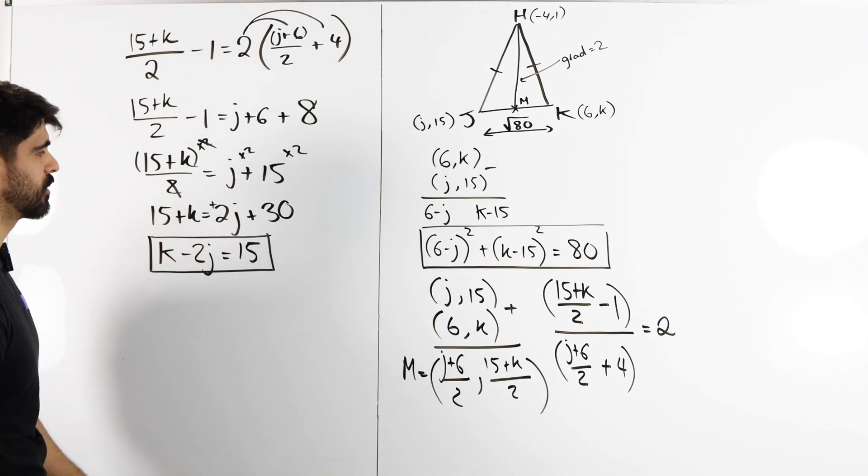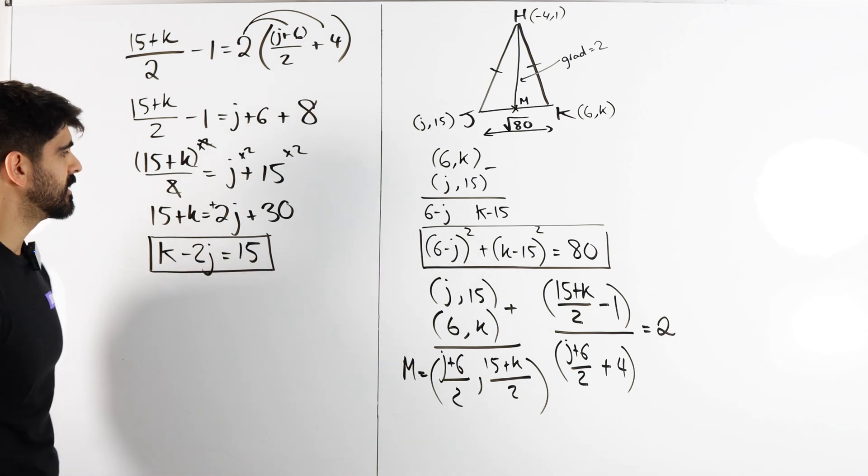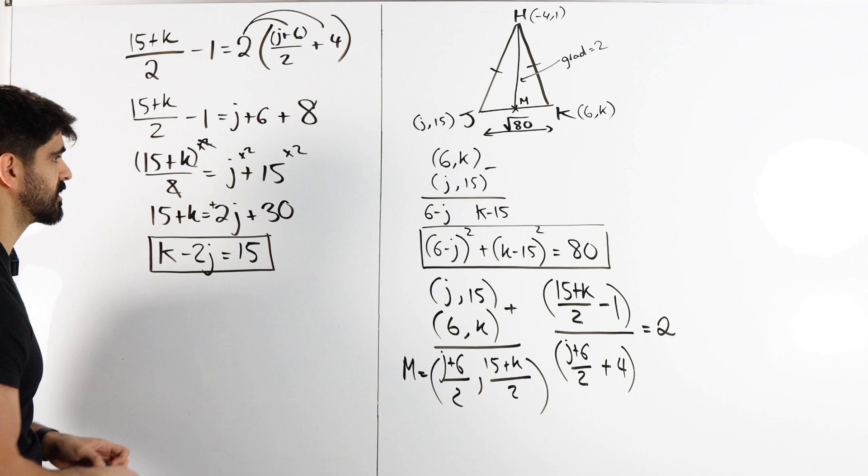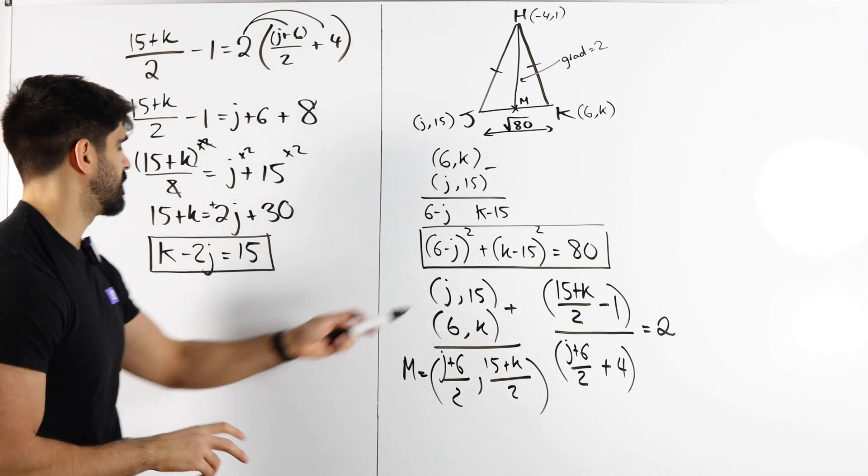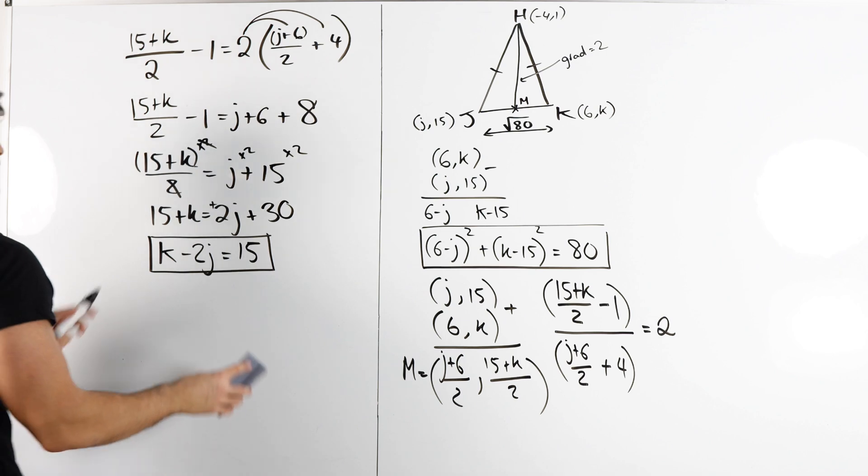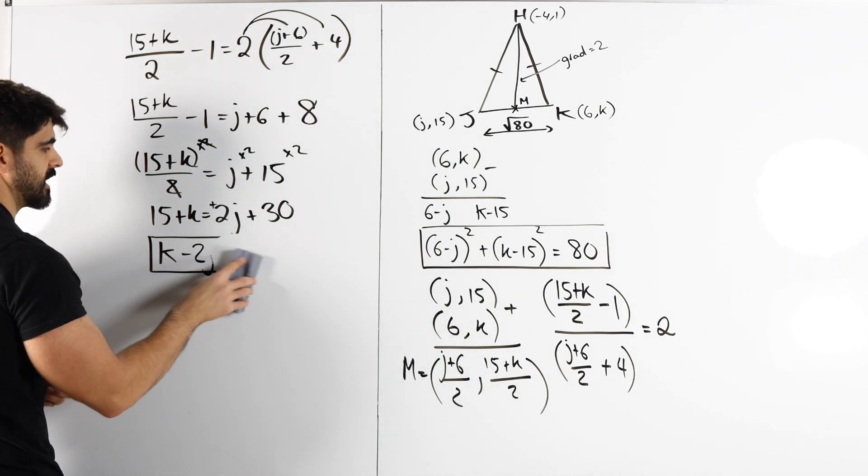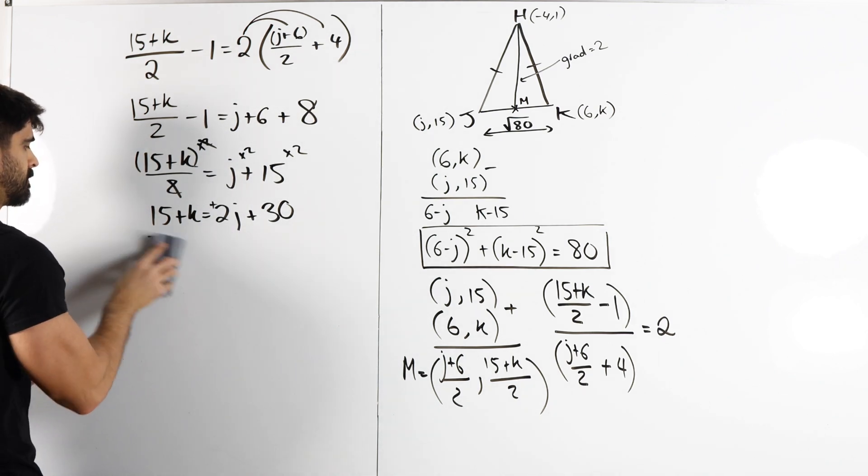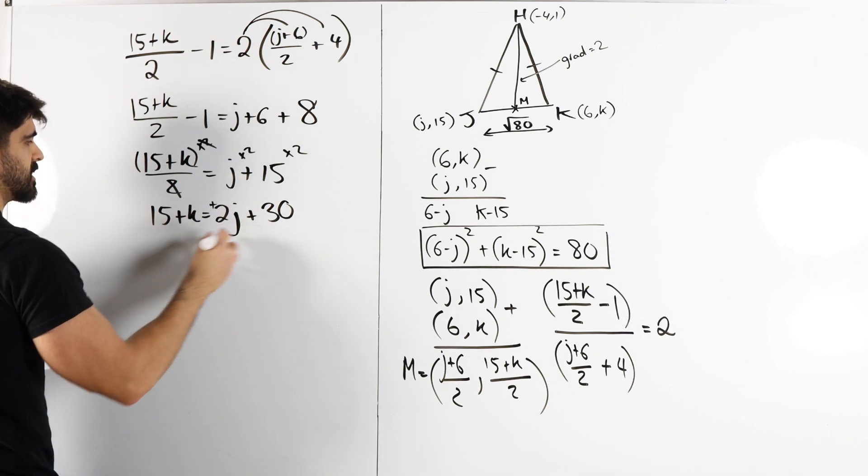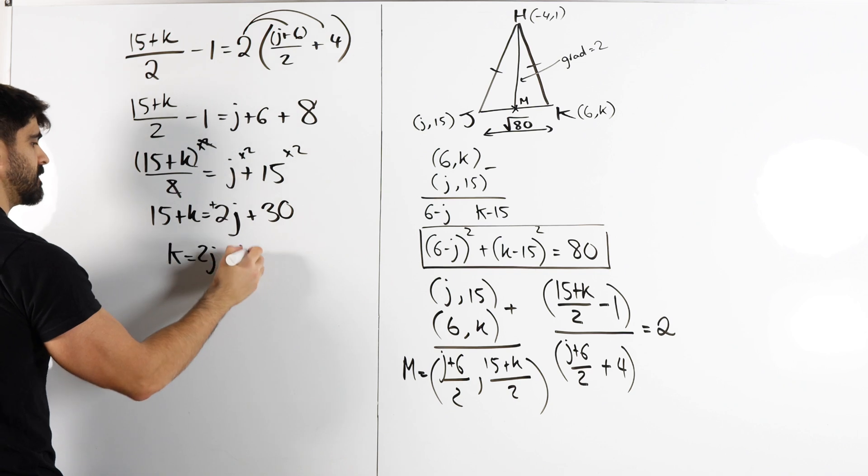We get this simultaneous equations question now. Which actually, because that is a squared, I'm going to have to rearrange for K and substitute it in. That's going to work out nicely because the 15s are going to cancel. I'm going to rearrange this slightly differently. We get K is 2J and 30 minus 15 is just 15.